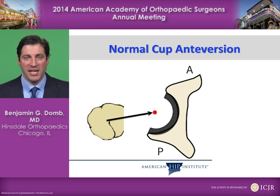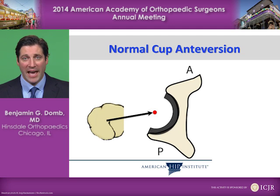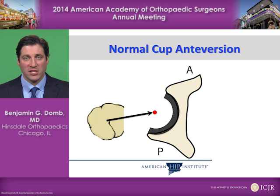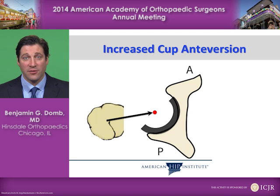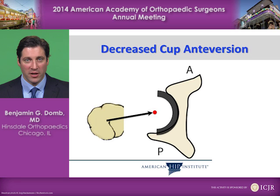In contrast, if you change the cup version, you really don't change the spatial relationship between the greater trochanter and the pelvis. Changing cup version has no effect on that spatial relationship or on the muscle vectors. In contrast, if we change the femoral anteversion, we do move the greater trochanter in space and change this relationship.